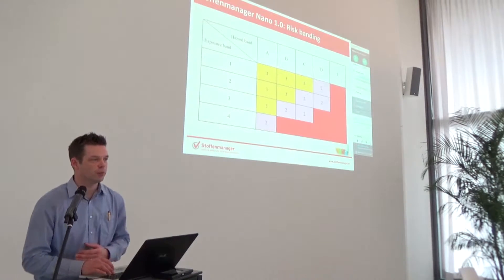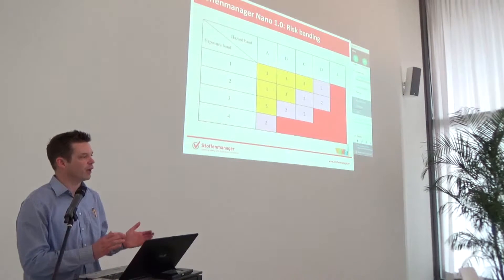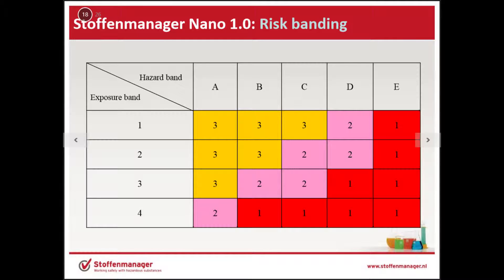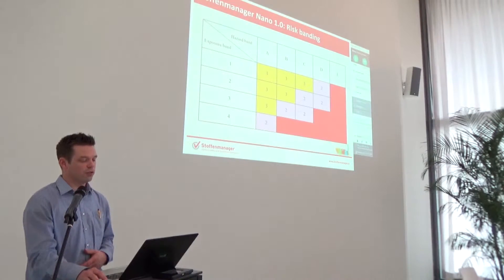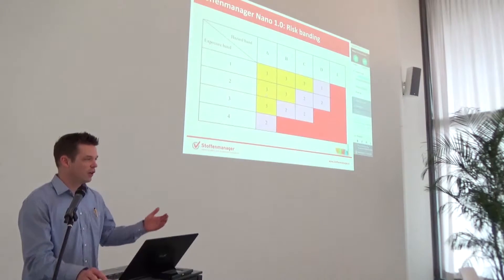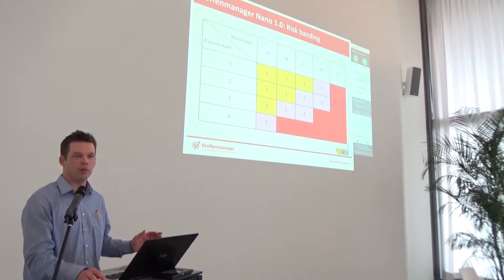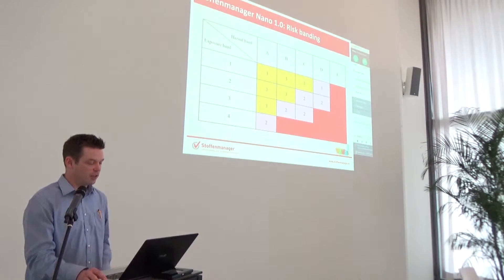For the risk assessment tool, both the hazard bands and exposure bands are combined into what we call a risk matrix. If you have high hazard and high exposure, you end up in the red area — high risk priority one. If you have low exposure and low hazard, you end up here. We deliberately didn't make this area green because for nano we don't know yet. For chemical substances this would be a green area because we know from measurements that it's safe, but for nano we don't know.